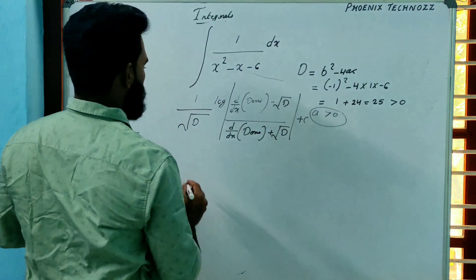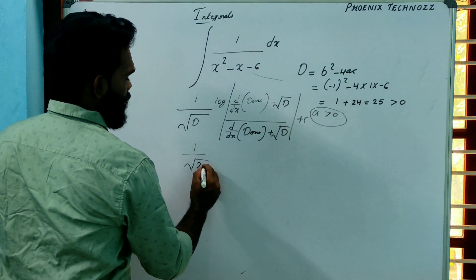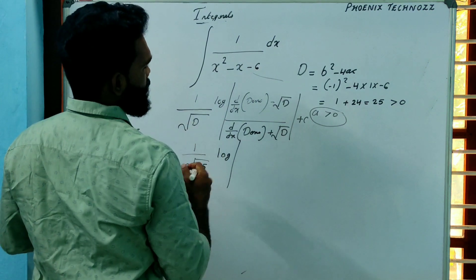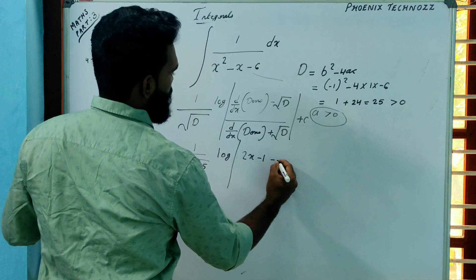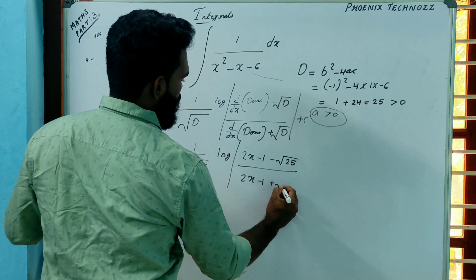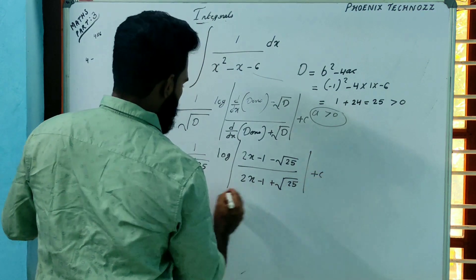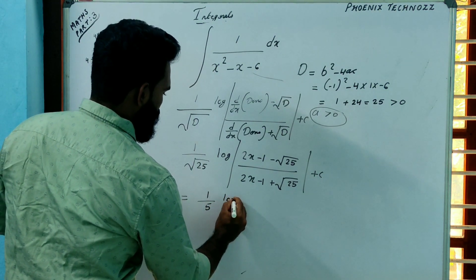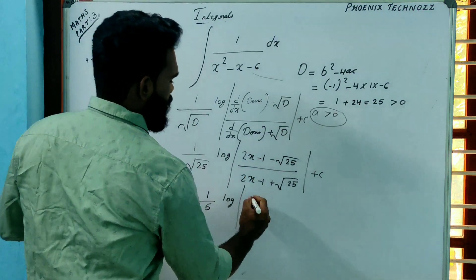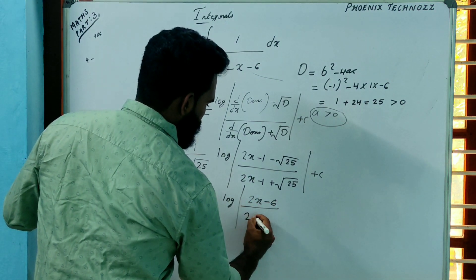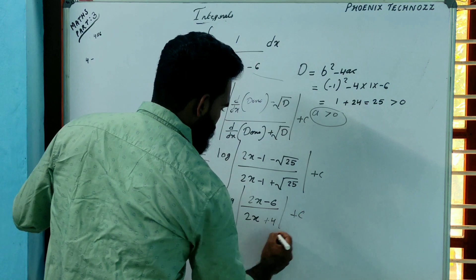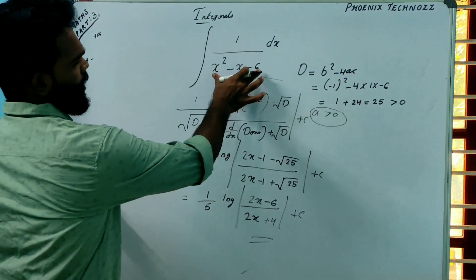With D = 25, the answer is (1/√25) log |(derivative of x²−x−6 − √25) / (derivative + √25)| + C. The derivative of x²−x−6 is 2x−1, and √25 = 5. So: (1/5) log |(2x−1−5) / (2x−1+5)| + C = (1/5) log |(2x−6) / (2x+4)| + C. This is the final answer for ∫1/(x²−x−6) dx.